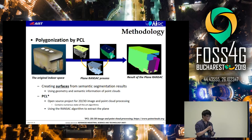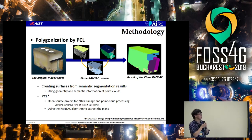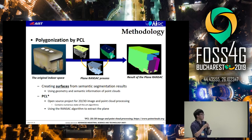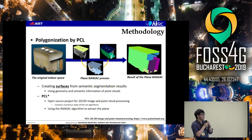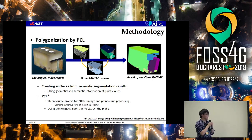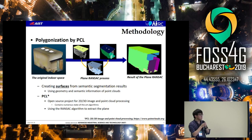The next process is polygonization using PCL. We create surfaces from the semantic segmentation result using the geometry and semantic information of the point cloud. PCL is the open source project for 2D, 3D image, and point cloud processing. It contains a number of state-of-the-art algorithms. We use the RANSAC algorithm to extract planes and separate all semantic information.